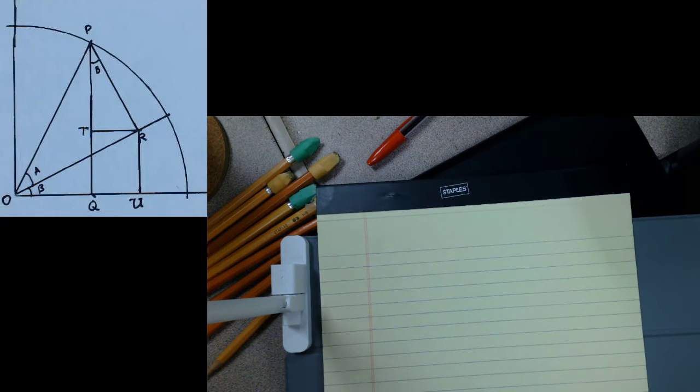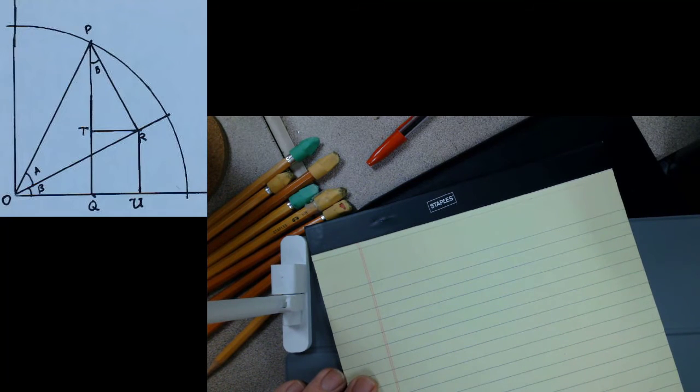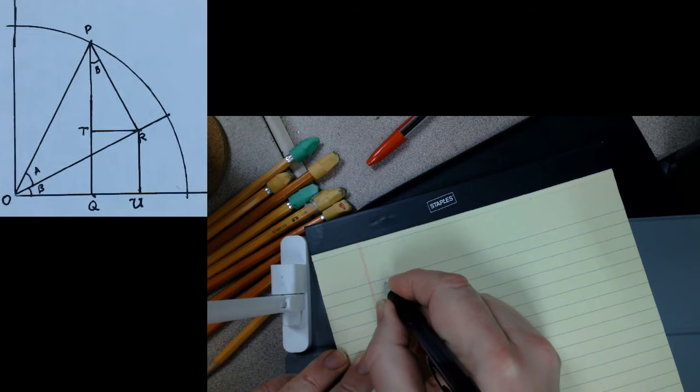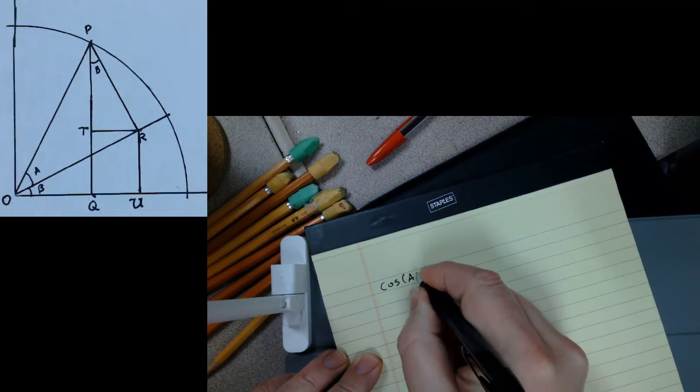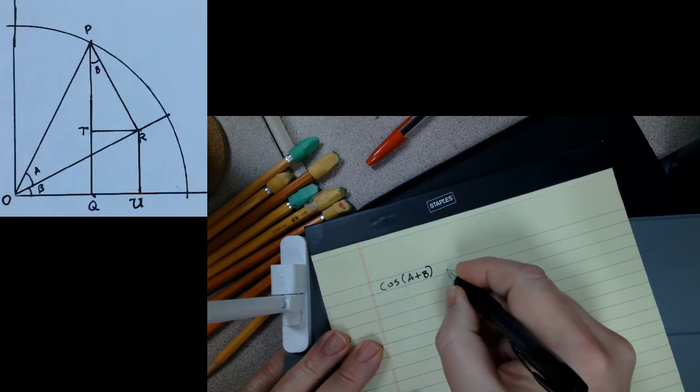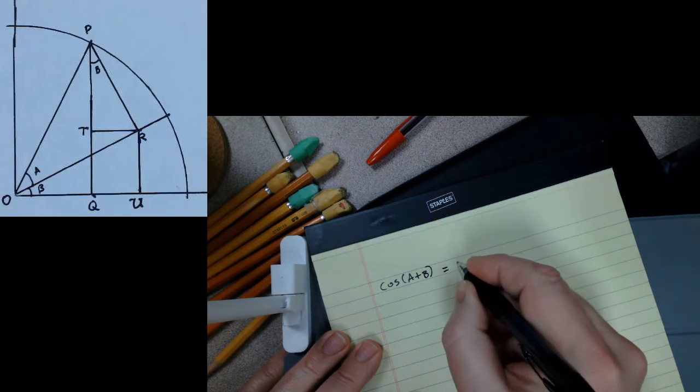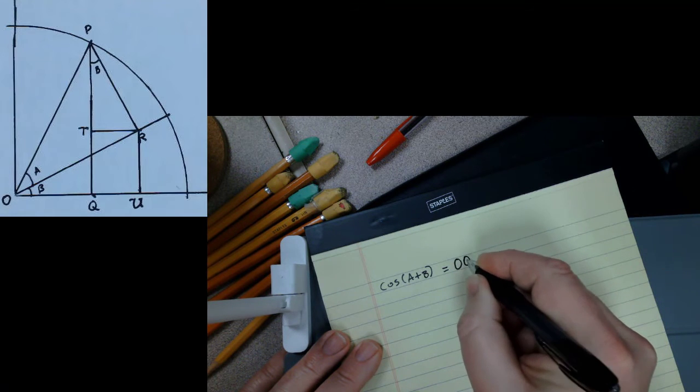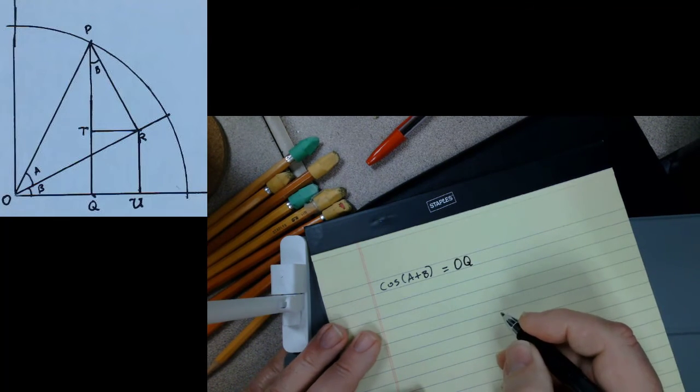The first thing I want you to notice from the diagram is that because this is the unit circle, the cosine of the angle A plus B is equal to exactly the length of the line segment OQ.